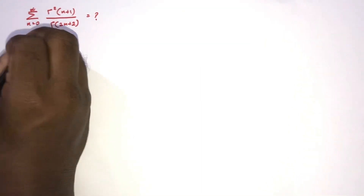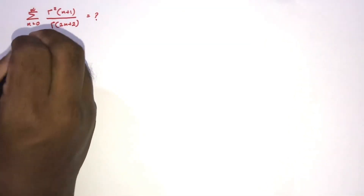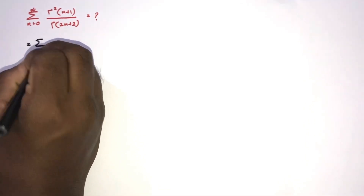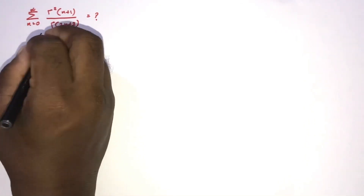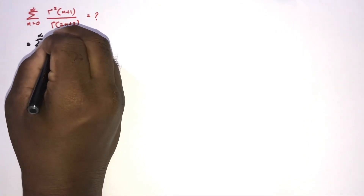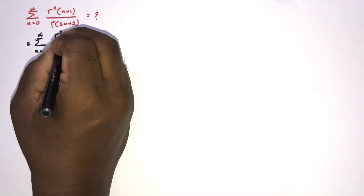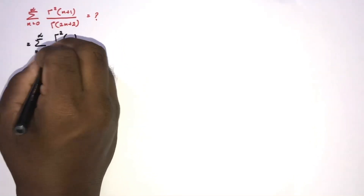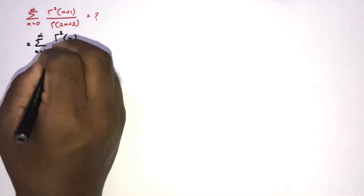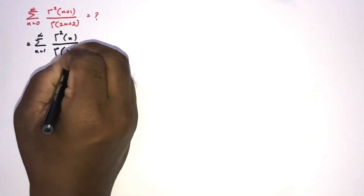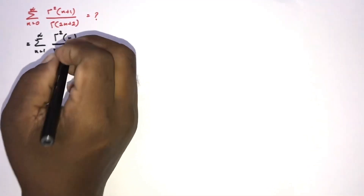First, I am going to shift the index. Here I am going to take n equal 1 to infinity. Now instead of n plus 1, we plug in n. So here n, and gamma of 2 times n plus 1, so 2 times n.